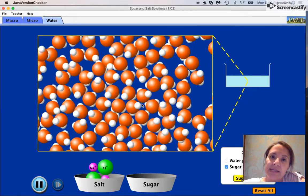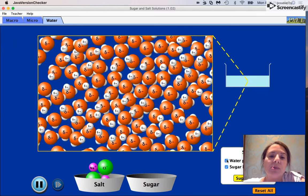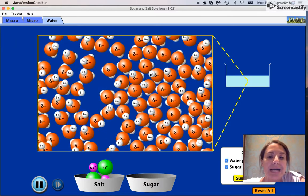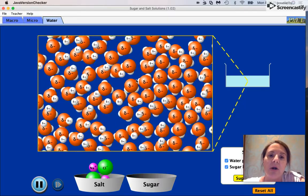Now we know from a previous lesson that water is a polar molecule, and the reason why it's polar is because it has partially charged regions on the actual molecule itself.